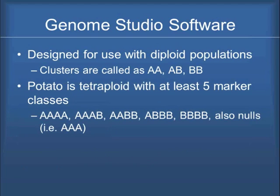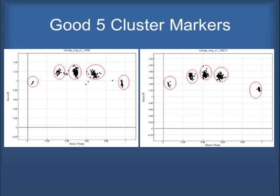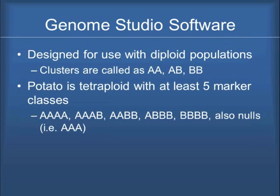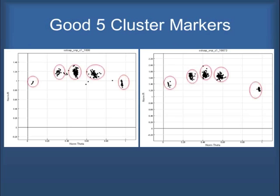With the tetraploid it gets a little more complicated because we have five marker classes, and then there's also the question about nulls and how those play into that. When we're working with diploids we really just have the three clusters.